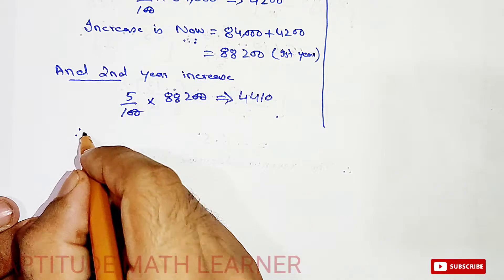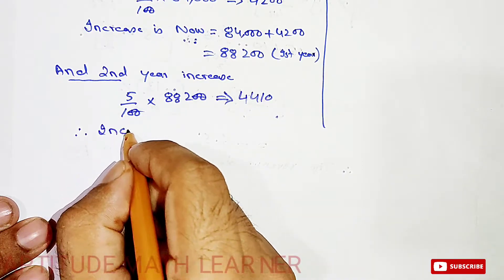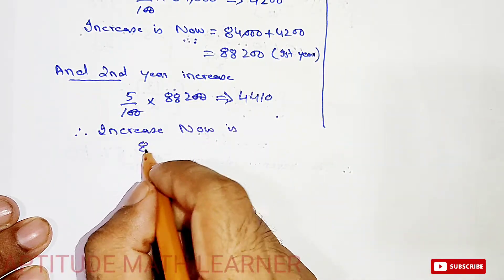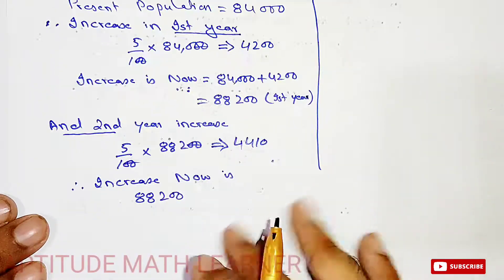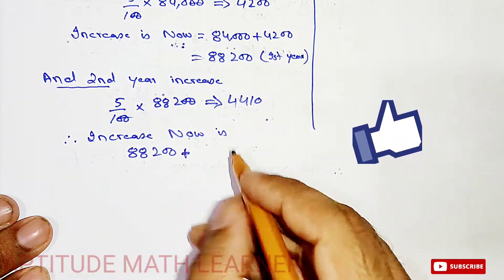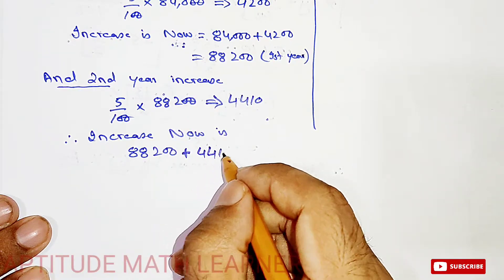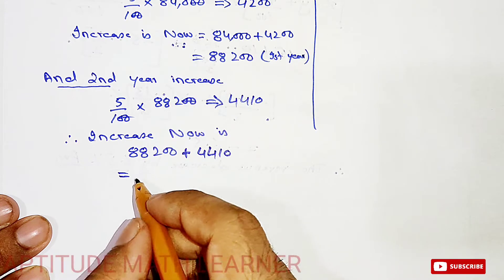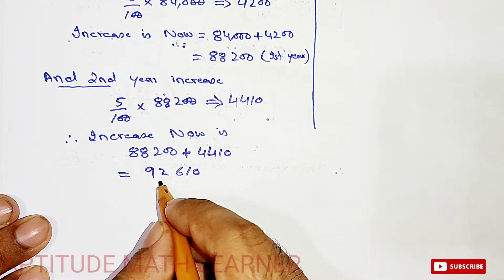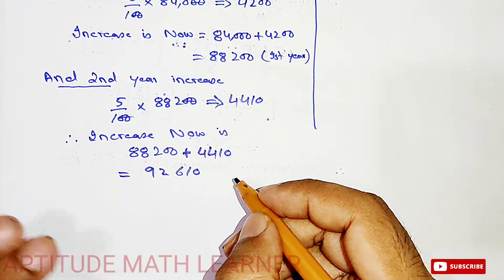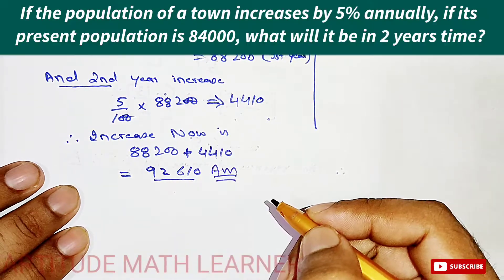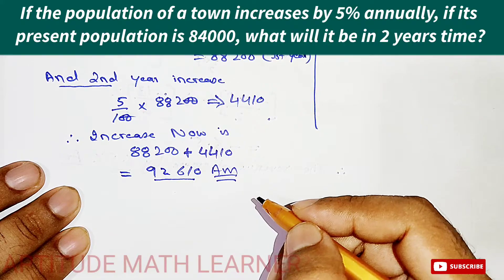So for the second year, the population is 88,200 plus 4,410, which becomes 92,610. This is the population after two years, and this is our answer.